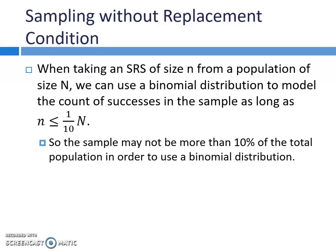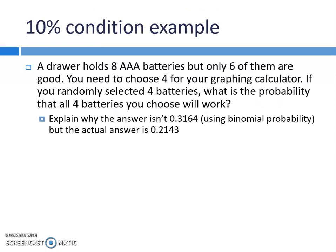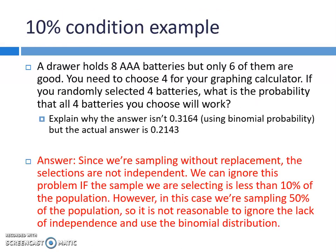Here's an example about sampling without replacement. Take a moment, read it over, and see if it makes sense why the 10% condition holds true, and why we can't use a binomial distribution if it doesn't. Next video, we'll talk about mean and standard deviation, as well as geometric random variables.